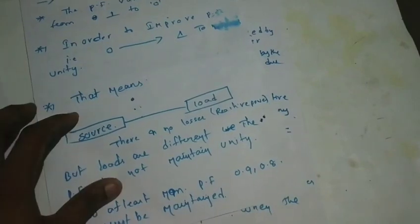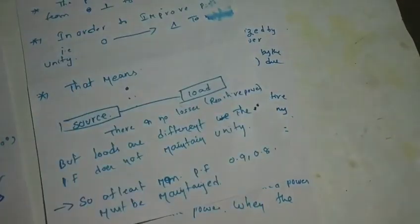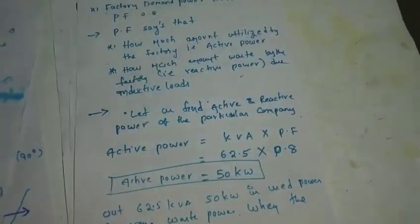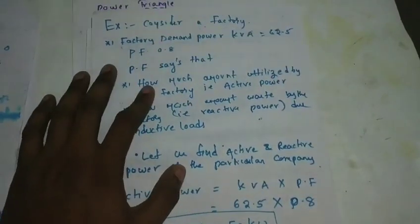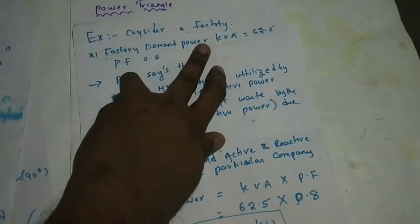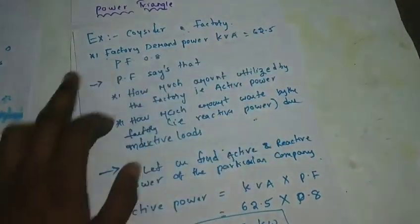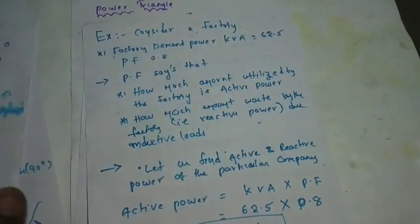We want to maintain a minimum power factor — minimum 0.8 maintenance. Now suppose we have a factory. The total load is 62.5 kVA. The apparent power is 62.5 kVA. So at this power factor, you have a 62.5 kVA demand.